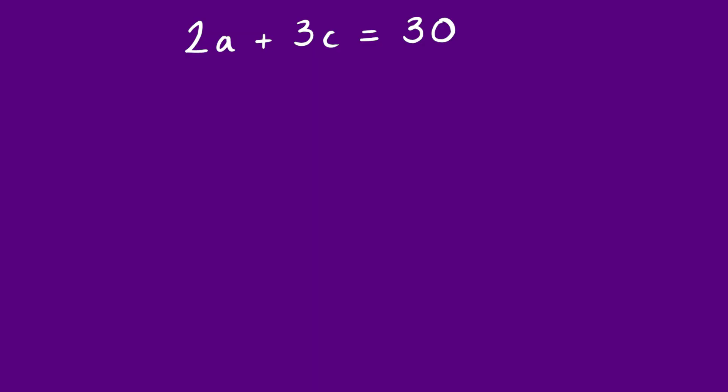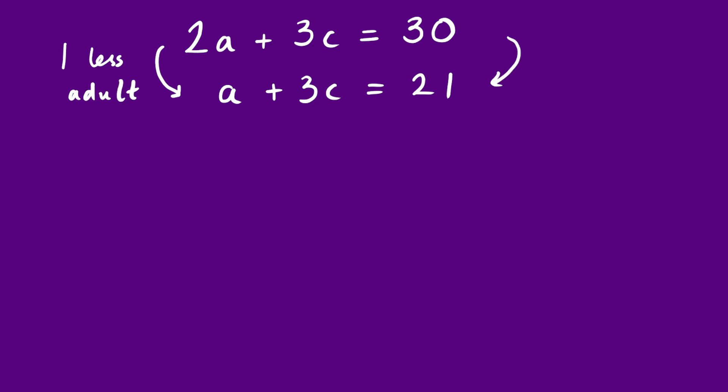We can't say for certain how much each ticket costs with just one equation. However, when we introduce a second equation — a second bit of information — for example, one adult ticket and three children's tickets cost £21, and assuming ticket prices are the same in both cases, now we can work it out. They have the exact same number of children; the only difference is one fewer adult and the cost is £9 cheaper. That means the extra adult costs £9, so each adult ticket is £9.